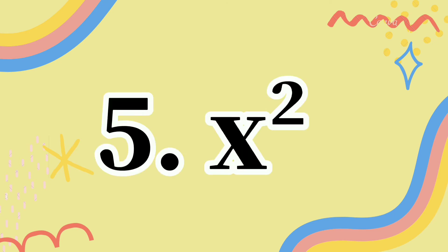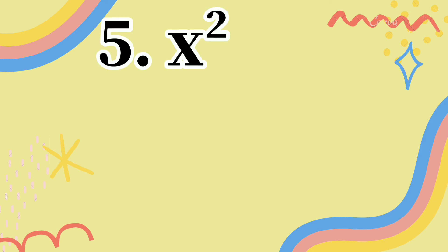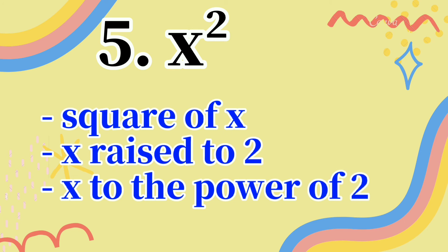For number 5, you can observe there are small numbers written above — that indicates an exponent. Since the exponent here is 2, the keyword we use is 'square,' or you can use 'raise' or 'power.' We can write it as: square of x, x raised to 2, or x to the power of 2.